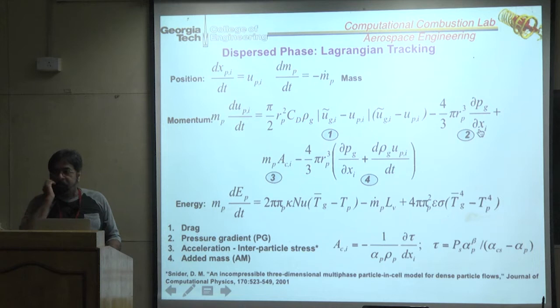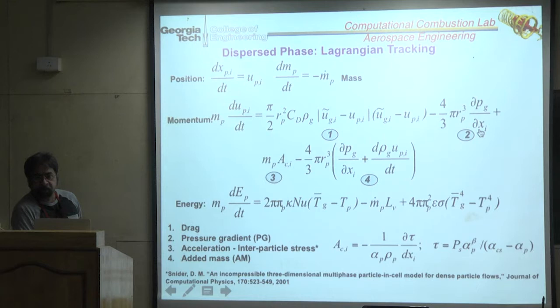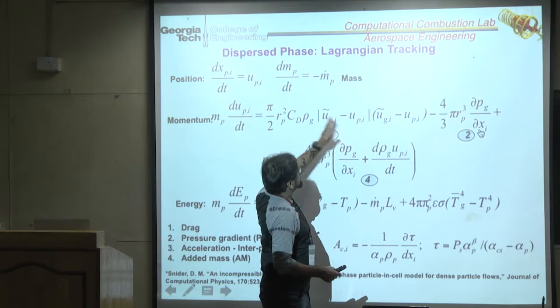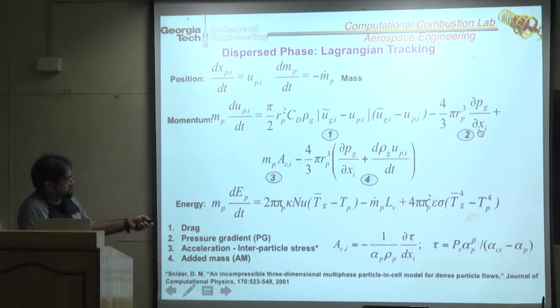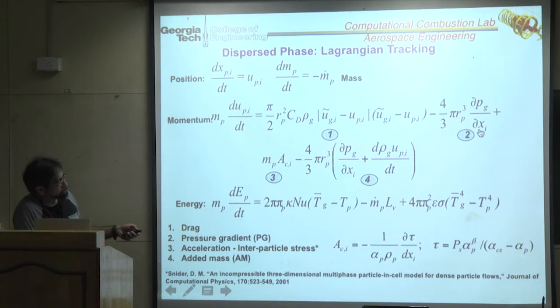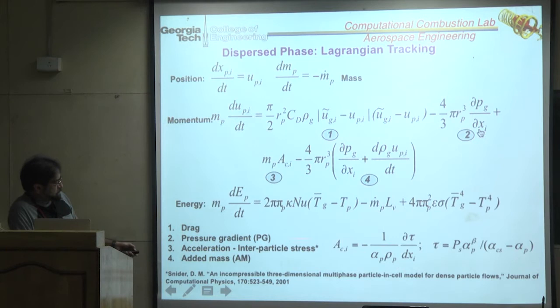There are also Basset term, Magnus term — about 20 additional force terms total. Typical Eulerian-Lagrangian solvers set most of these to zero because they mainly matter near the dense regime. These terms will automatically drop off once the flow becomes fully dilute. The acceleration term is a function of shear stresses with parameters set by theory.